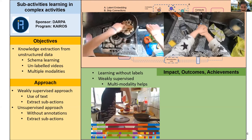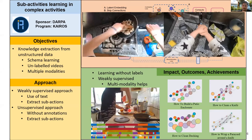This shows one example where the person is making a sandwich, and these different colors represent different sub-actions detected for this activity. Another representation we can extract from long videos is a graphical representation, which is easily interpretable. Each graph represents an activity — each node in the graph is a sub-action and the edges are the relations between those sub-actions, showing how they operate along time. This is a more interpretable form.